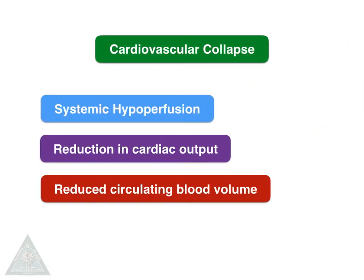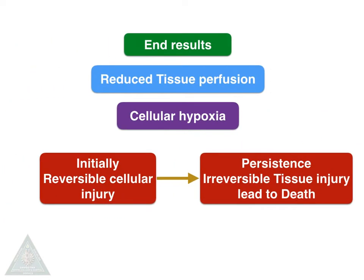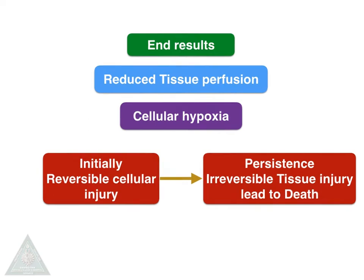This cardiovascular collapse can result from systemic hypoperfusion, reduction in the cardiac output, and reduced circulating blood volume. The end result of shock is reduced tissue perfusion and cellular hypoxia. Initially it is reversible, and later when it persists, it is irreversible and leads to death.